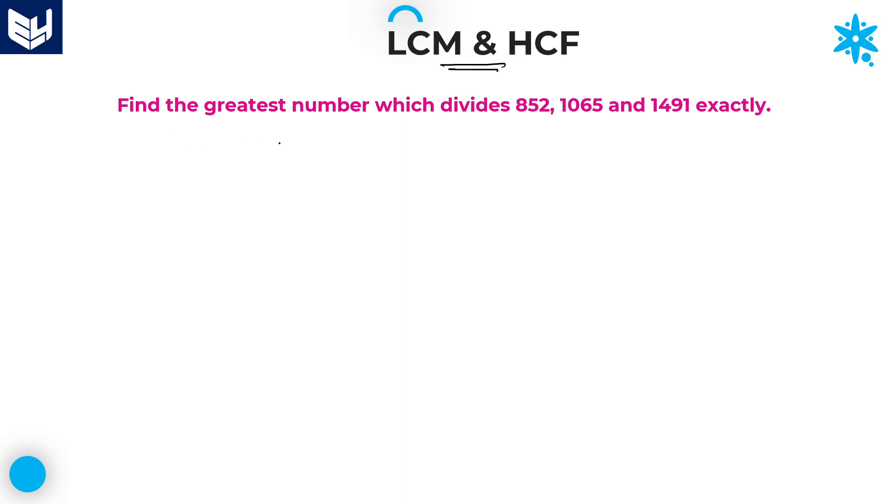See the first question in this session. Find the greatest number which divides. Greatest number is nothing but HCF. We need to find the HCF of 852, 1065, 1491 exactly. We need to find the HCF of these numbers. To calculate HCF of any numbers, always better to go with long division method. Take any two numbers out of these four. First, I will take 852 and 1065. According to the long division method, divide greatest number with smallest number one time.